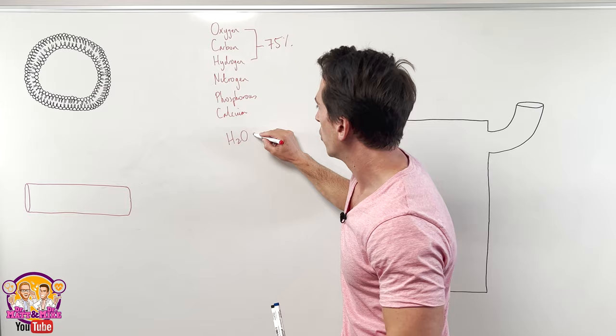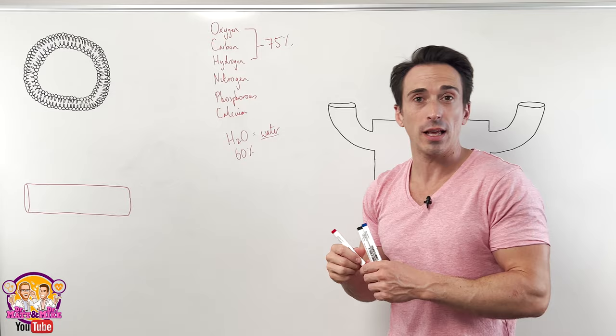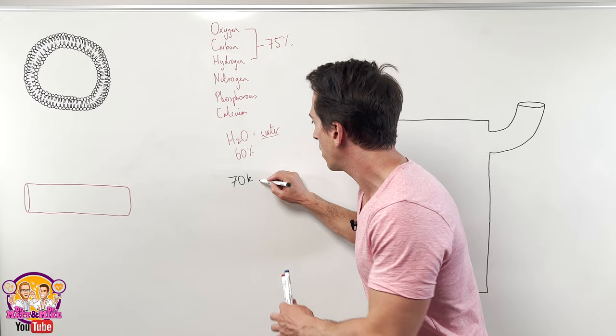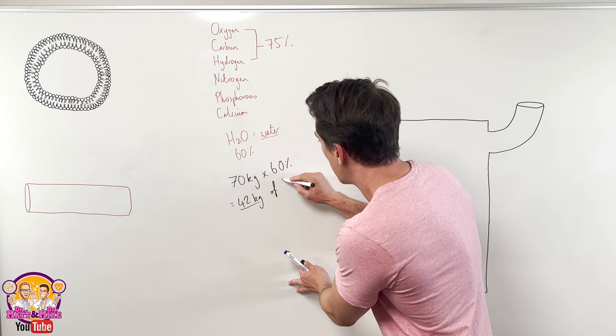Which means around about 60% of you is water. So what would that be? You can calculate that, right? So I'm a 70 kilogram male, 70 kilograms times 60% equals 42 kilograms. I have 42 kilograms of water inside of my body.